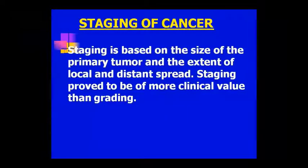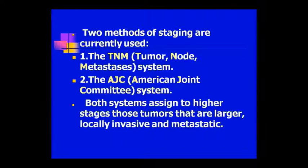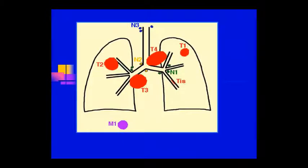Staging is on the basis of primary tumor size and how far local extension has occurred. Staging has more clinical value — we get more clarity from staging. There are two methods of staging: one is TNM and the other is the AJC, or American Joint Committee system. Both systems deal with higher stages of cancer, involving large tumors, local invasion, and metastasis.